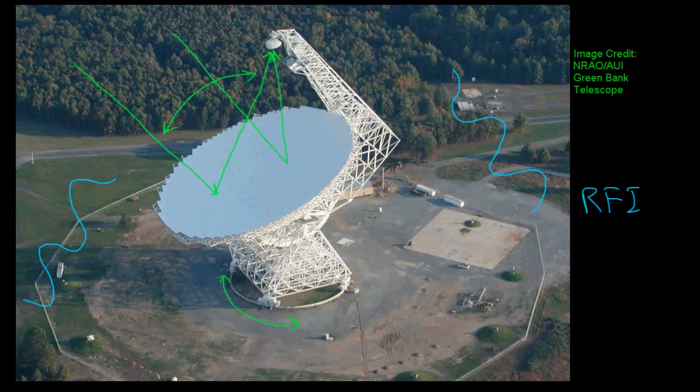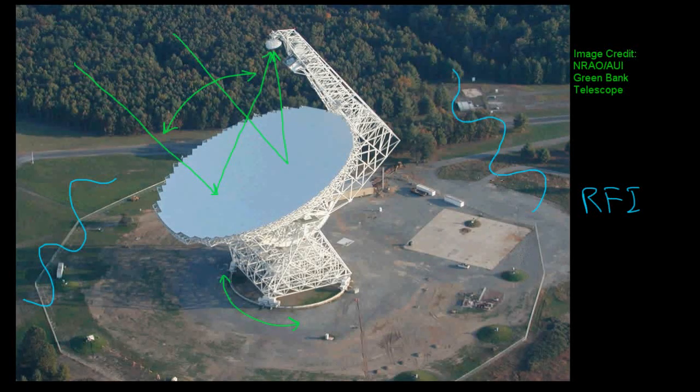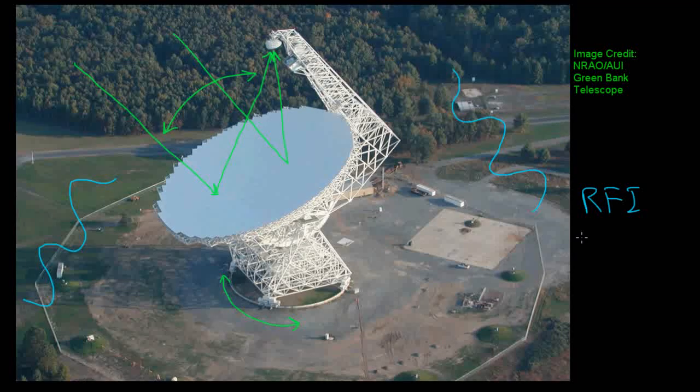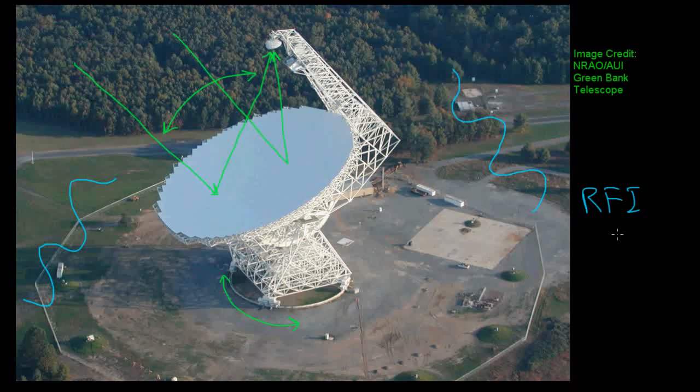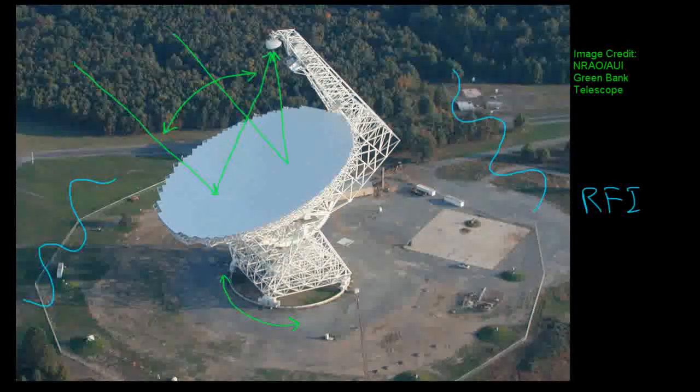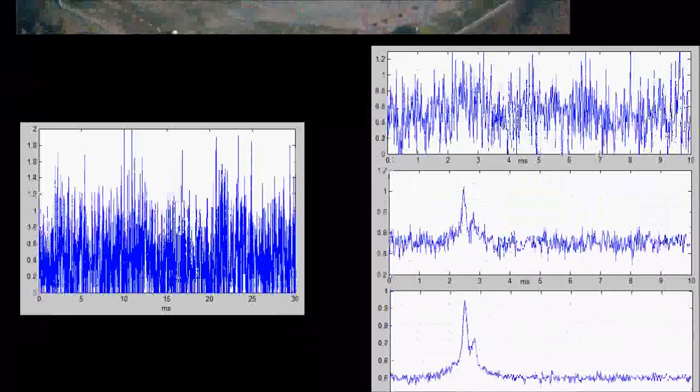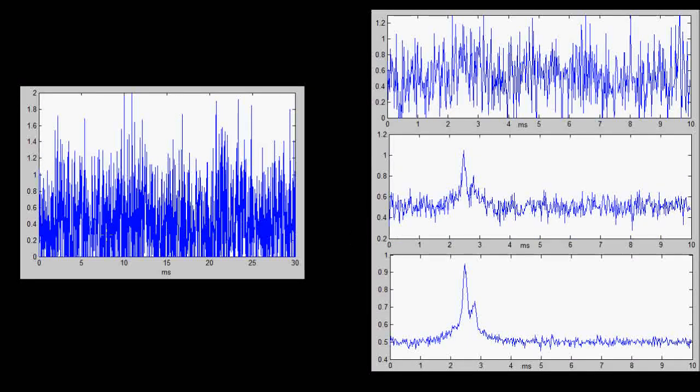However, various methods have been developed to try to either block or filter out or at least minimize the effects from this radio frequency interference. Now, even after we've tried to eliminate as many of these noise sources as possible, when we point our radio telescope at a given pulsar, the individual pulses are generally not strong enough to be seen over the background noise.